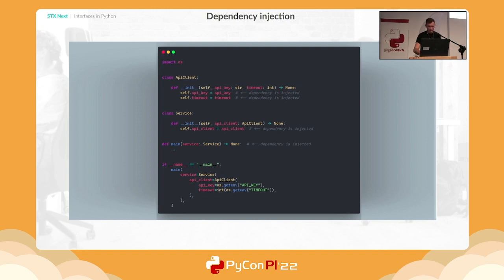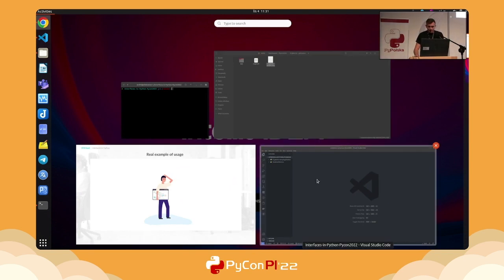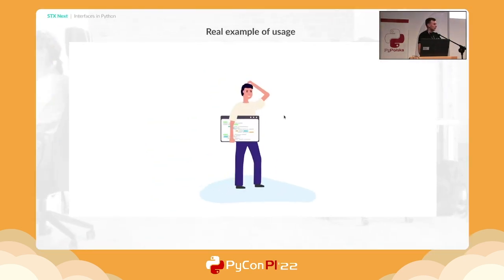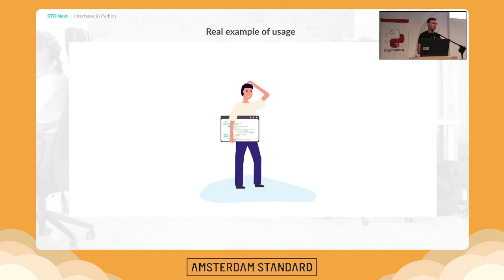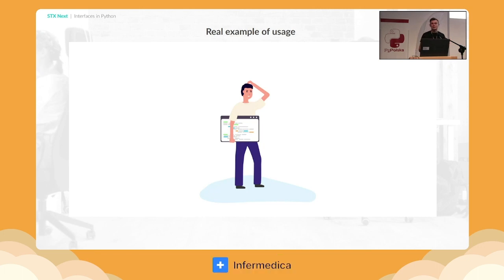Let's take a look at a real-world use case. The first one is a cryptocurrency application — a CLI — which allows us to perform operations on cryptocurrency exchanges. How many people know what a cryptocurrency application is, or something like Binance, FTX, or Bitfinex?